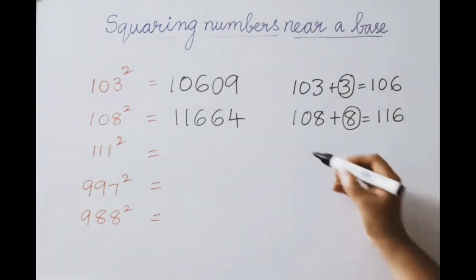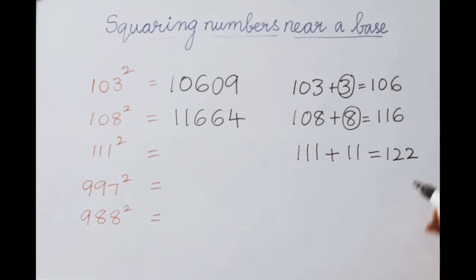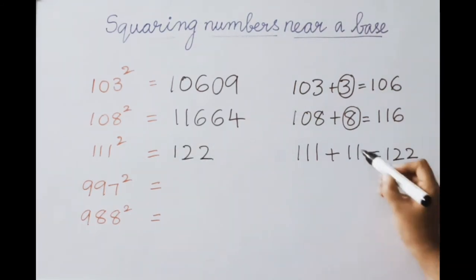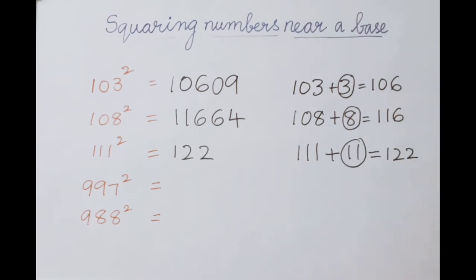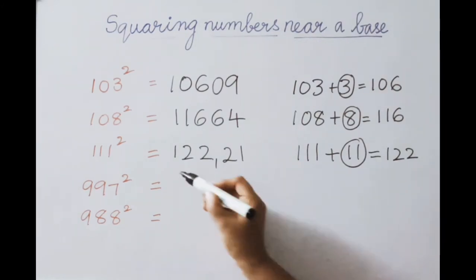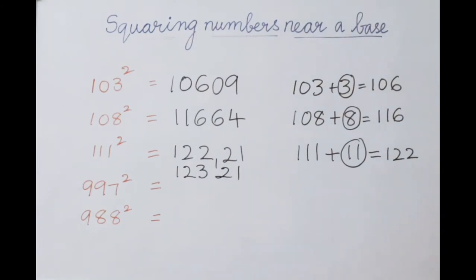Next example: 111 squared. For base 100, the excess value is 11. Add to given number: 111 plus 11 equals 122 — first part answer is 122. Now square the excess value: 11 squared is 121. Base is 100 so only 2 digits allowed; write 21 and carry 1. So 122 plus 1 is 123, remaining digits 21. Therefore 111 squared equals 12321.